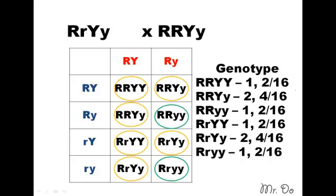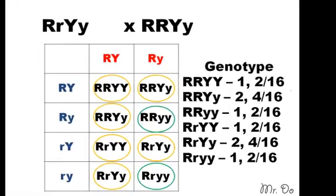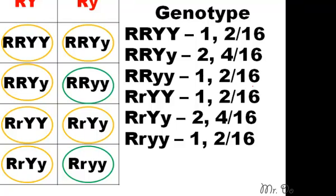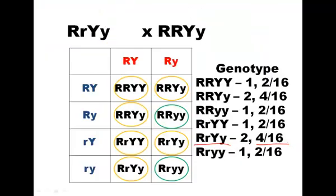So we do our dihybrid cross and we have the genotype ratio. Then we look at what was asked — it was asked for the heterozygous for both traits. What's the chance of getting the heterozygous for both traits, genotype-wise? We look and find it: heterozygous for both traits has a chance of 4 out of 16. That's the long way.